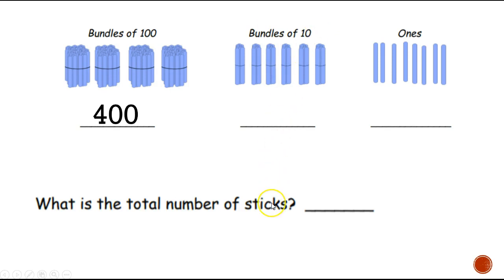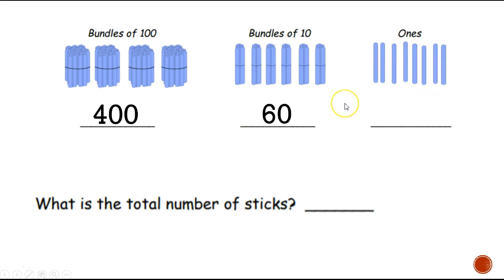Now count the bundles of 10 — count how many there are and write out the number. Let's count together: 1, 2, 3, 4, 5, 6. Did you count six and write it like this — sixty? Now go ahead and count the ones and write it out. Let's count together: 1, 2, 3, 4, 5, 6, 7, 8. Did you count eight and write it like this? Give yourself a kiss on the brain!